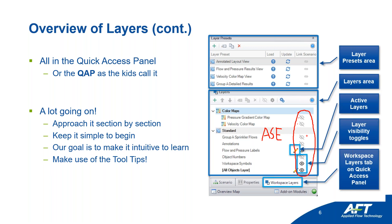The order of layers matters: if you have a color map on, it takes precedence over any other colored pipes defined in a lower layer. This is done with the eyeballs as you turn them on or off — we call this 'show' or 'hide.'